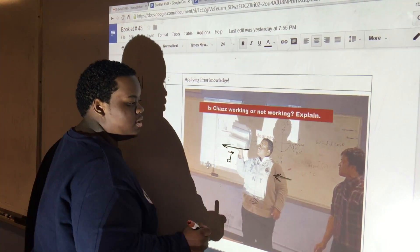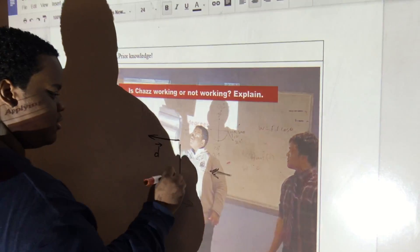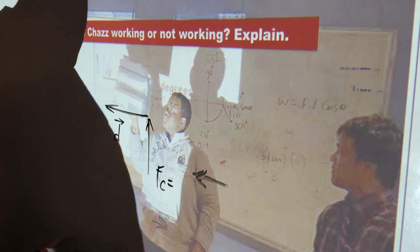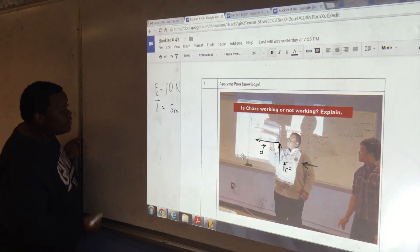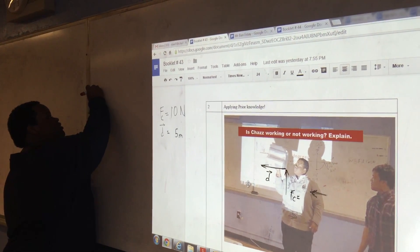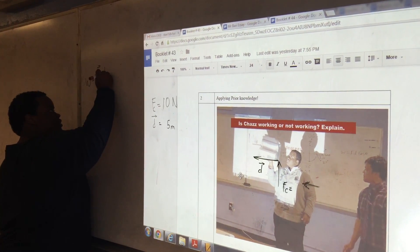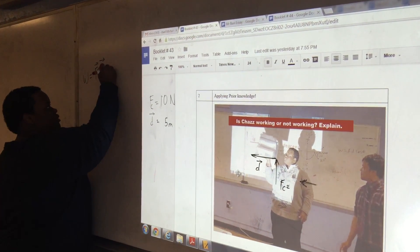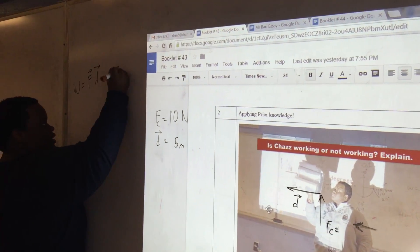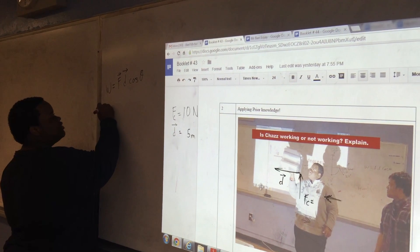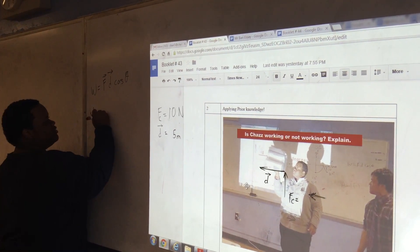So in this situation, the force of Chas is 10 newtons. The displacement is 5 meters, and because this is a 90 degree angle, that means our cosine theta is cosine 90.